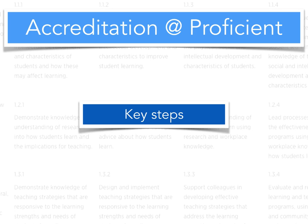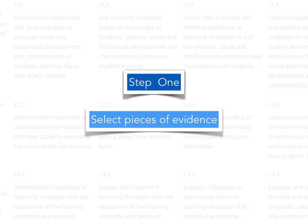This video is the first in a number of videos that will outline some of the key steps for accreditation at Proficient. This is step one, which is about selecting your pieces of evidence to help you satisfy accreditation at Proficient.